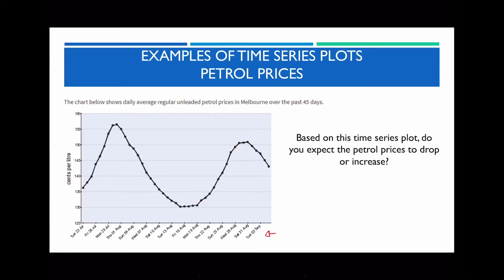The x-axis can be in years, months, days — in this case we're looking at days. Along the y-axis, it shows you the price of petrol in Melbourne. The question reads: based on this time series plot, do you expect the petrol prices to drop or increase? If we look at the time series graph, notice that it initially starts off and gradually increases, followed by decreasing, then increases, and then decreases. These changes are what we refer to as fluctuations — it will either spike up or spike down.